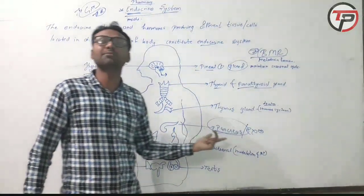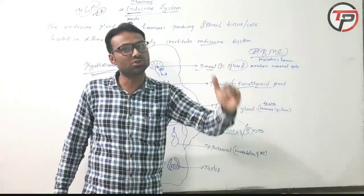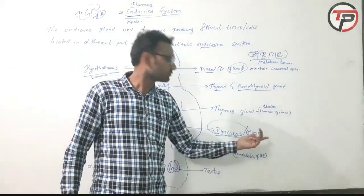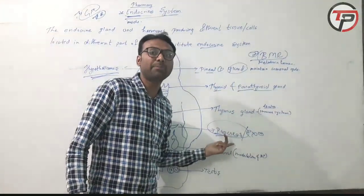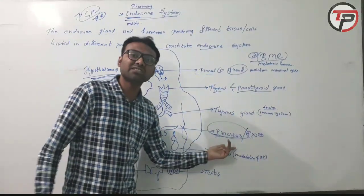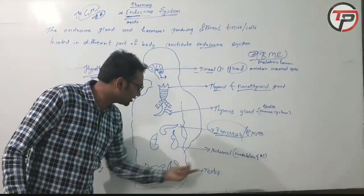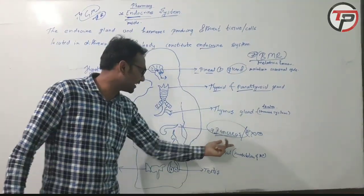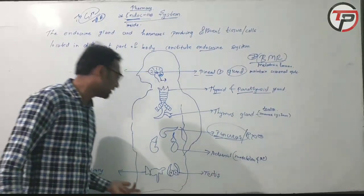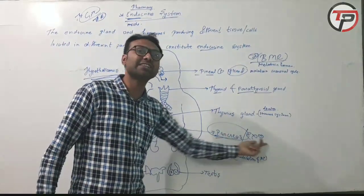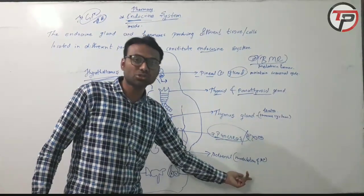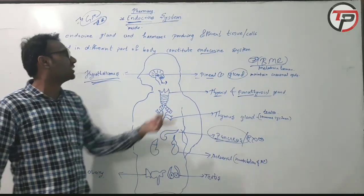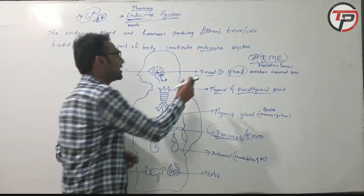Insulin released by the pancreas does great work — it breaks down sugar and glucose and helps maintain blood sugar in diabetic patients. The pineal gland, thyroid gland, thymus gland, pancreas, adrenal gland, and testes each release their respective hormones. Pancreas releases insulin, testes release testosterone, and ovaries release estrogen and progesterone — all into the blood.